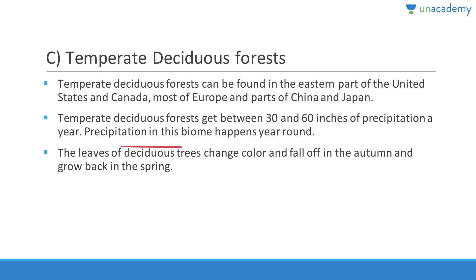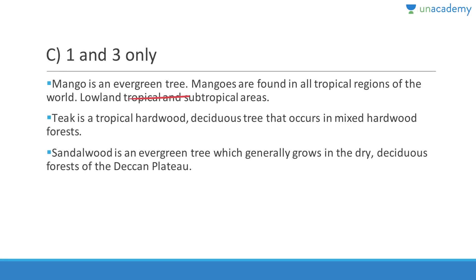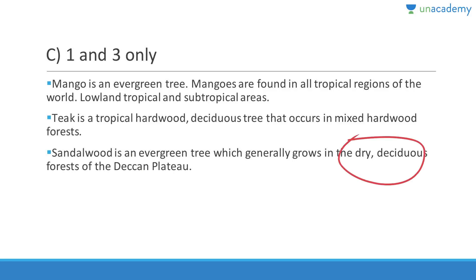Among mango, teak, and sandalwood trees — which are evergreen? Mango tree is evergreen; teak is a tropical hardwood deciduous tree, not evergreen; sandalwood is an evergreen tree that generally grows in the dried deciduous forests of the Deccan Plateau. The answer is C — one and three.